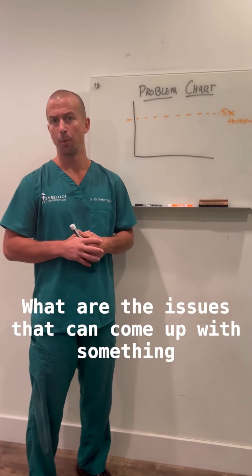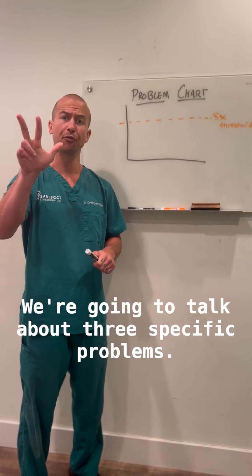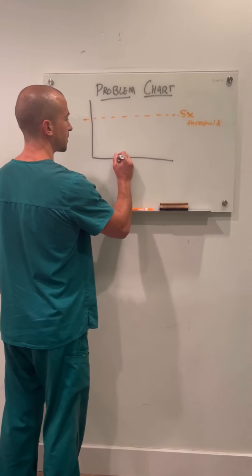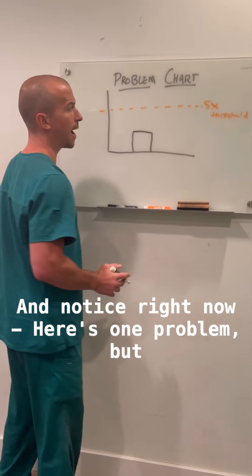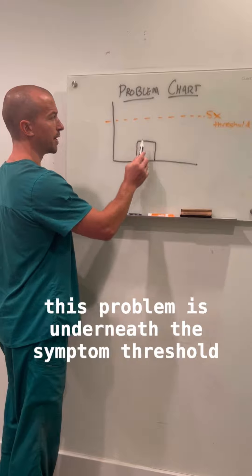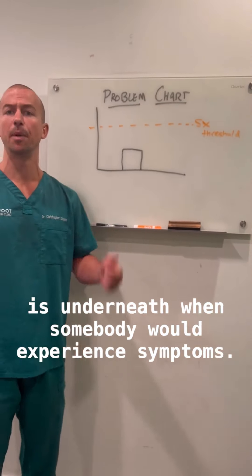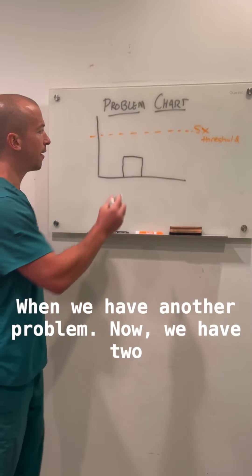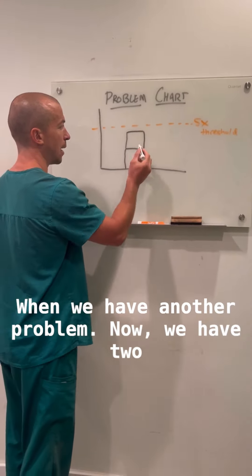What are the issues that can come up with something like lupus or an inflammatory arthritis problem? We're going to talk about three specific problems. Here's one problem — but this problem is underneath the symptom threshold, underneath when somebody would experience symptoms. When we have another problem, now we have two.